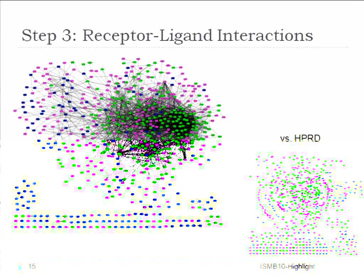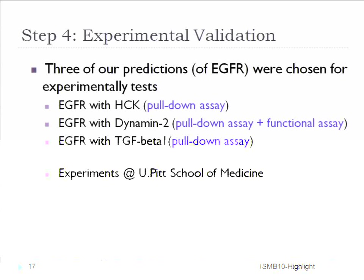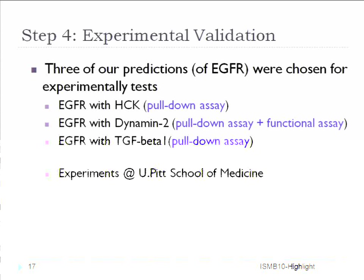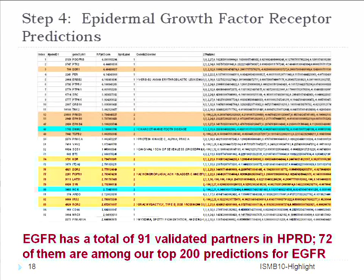Our ultimate final goal is to make hypotheses from our predictions. We provide three test cases in our experimental validation — how to choose hypotheses from the predictions and then validate them in lab experiments. We chose the EGFR receptor; from its top 200 predicted list, there are three candidates not already labeled as interacting in HPRD. We tested these three because we already had the experimental setup for those proteins.